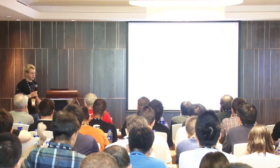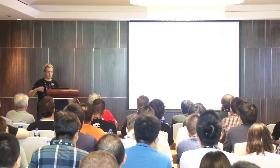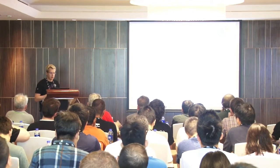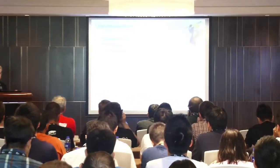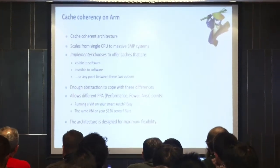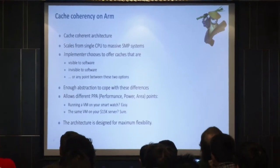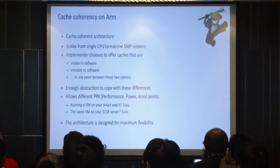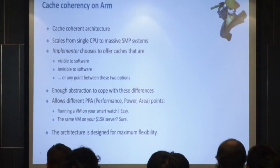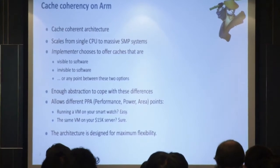The first thing is that the cache is coherent on our architecture. It can scale from a small single CPU to a massive server with multiple processors. What we offer is that the implementer chooses how to expose the cache to the software — it can be visible to the software, invisible to the software, or a mix of both. There is enough abstraction in the architecture to cope with all these differences.